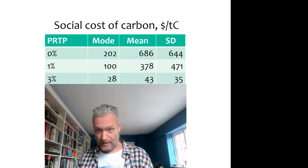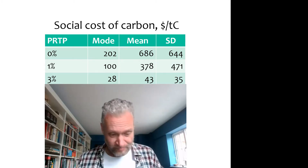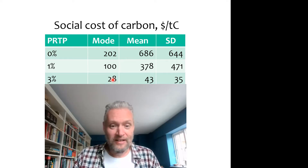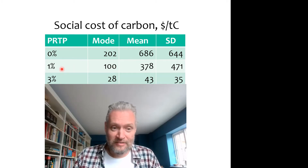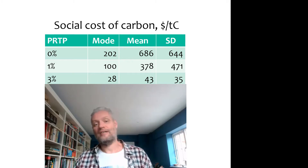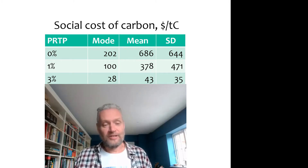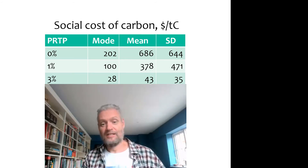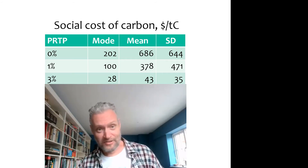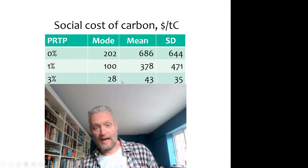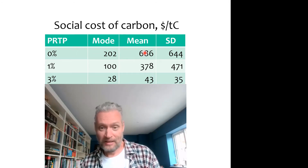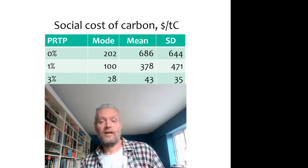As is perhaps clearer if you focus on the mode and the mean: for a 3% pure rate of time preference — a 5% discount rate — you have a mode of $28 per ton of carbon, which goes up to $100. If the discount rate goes to 1%, it goes up to $202. If the utility discount rate goes to 0, that is the mode — the best guess. Since the uncertainty is right-skewed, the mean is greater than the mode, and it increases further for lower discount rates.